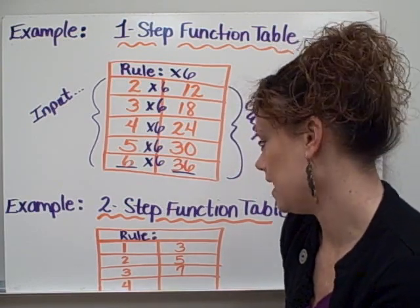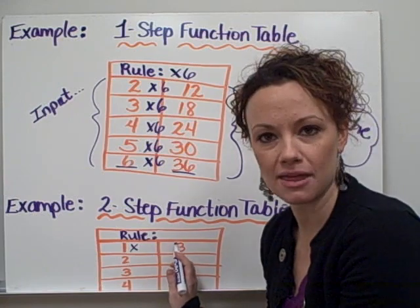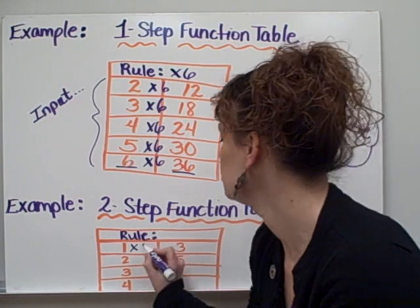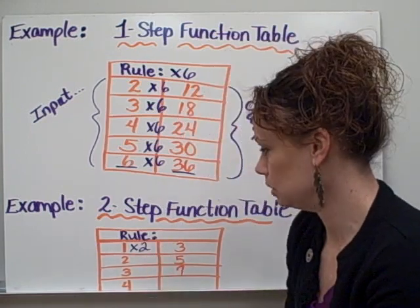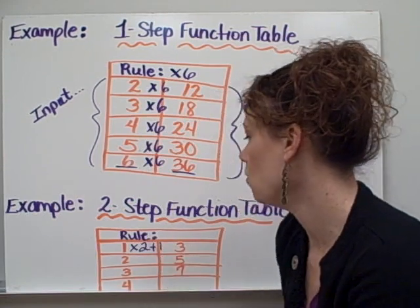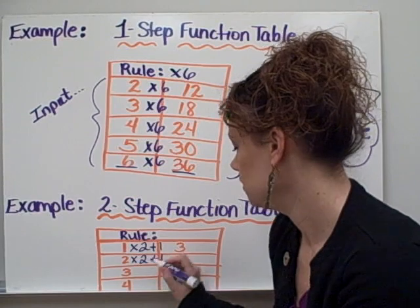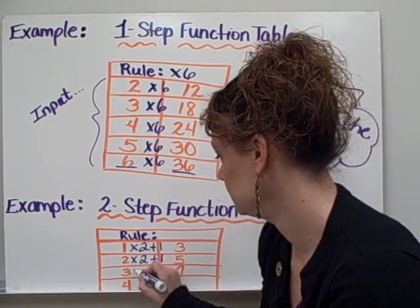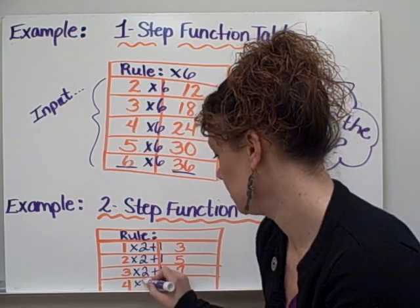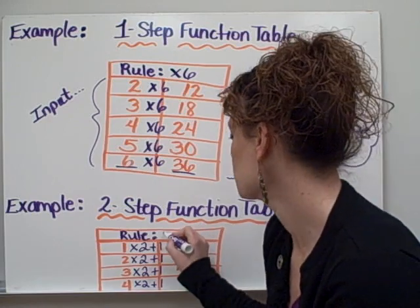So to get from one to three, another way that I can get there is I can multiply. If I multiply by three, it's true I will get three. But then if I try to multiply two by three, am I going to get five? No. But possibly there might be something else that I could do. Let's try multiplying by two. One times two is not going to give me three. But if I add on one more, one times two equals two plus one, that will give me three. So let's try this and see if this works out. Two times two is four plus one equals five. Let's try it again. Three times two equals six plus one equals seven. So it seems to me that the rule of times two plus one works for this particular function table.